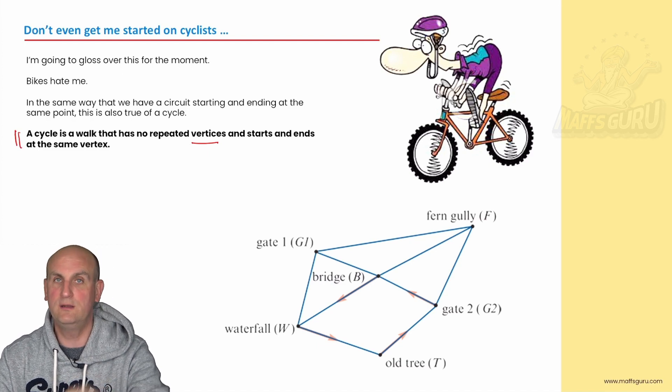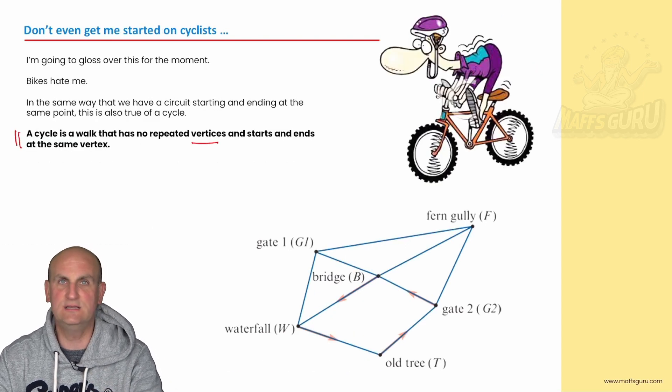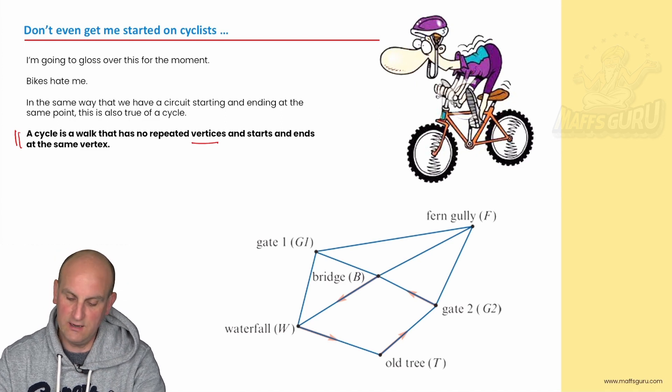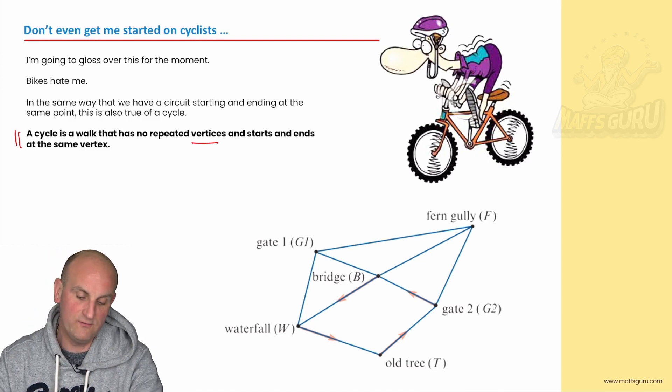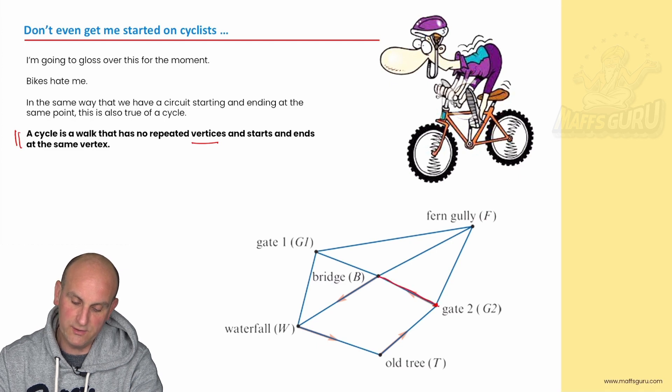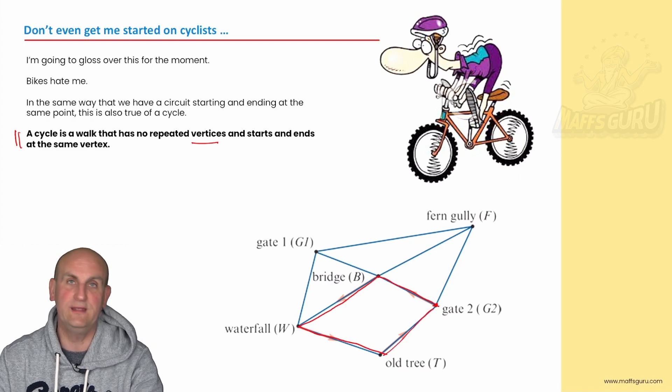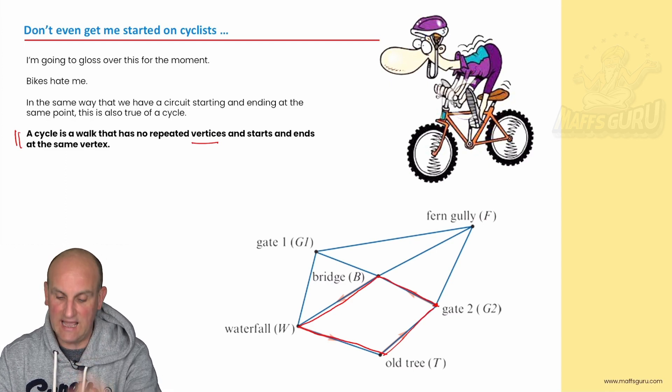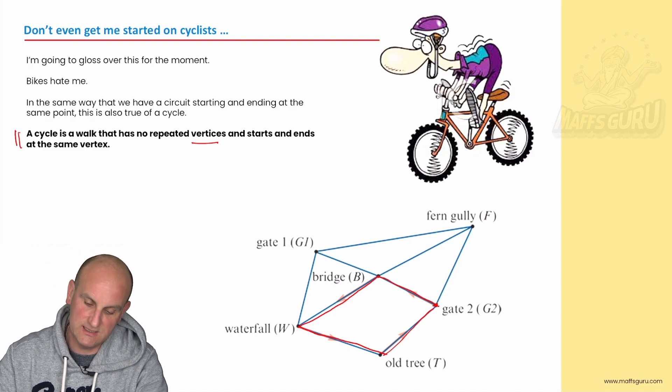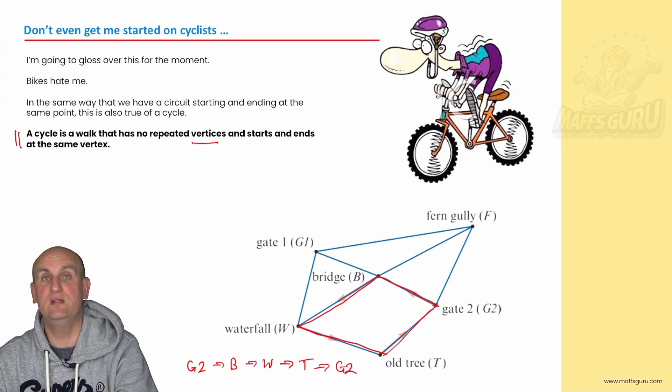A cycle is a walk that has no repeated vertices and starts and ends at the same vertex. So notice that a cycle doesn't repeat vertices. A circuit didn't repeat edges. This is why I can't remember this stuff. It is so nuanced. But again another great example here and thanks to Cambridge for letting me use your examples. What do we have here? We're starting and end at the same vertex. So we start at gate two. We go to the bridge. We go to the waterfall. We go to the old tree. And we go back to the gate. Now again it didn't have to do the whole thing. That was just one example of a cycle. You can do whatever you like on the diagram. So what did we have there? We had G2 to B to W to T and then back to G2. Because again we have to start and finish where we ended.